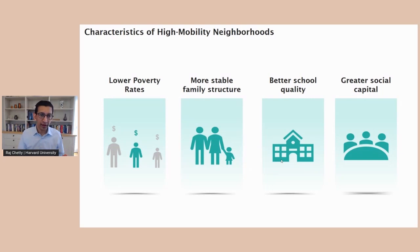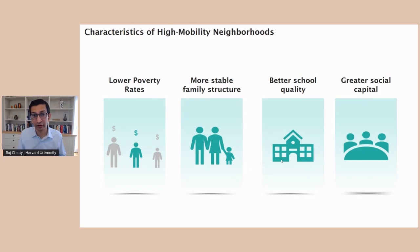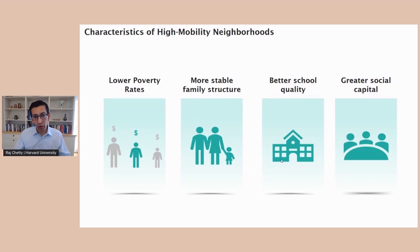Places with higher levels of upward mobility tend to have lower poverty rates — they tend to be more mixed-income communities rather than places with concentrated poverty. Second, they tend to be places with more stable family structures — more two-parent families rather than single-parent families. Third, they tend to be places with better schools, measured in various ways. And fourth, they tend to be places with greater social capital. I think about the old saying that it takes a village to raise a child as capturing what social capital is about. Places with a strong religious community — like Salt Lake City with the Mormon Church — tend to be places with high levels of upward mobility. This paints a picture that there are many different factors that play into what drives differences in rates of upward mobility across areas.